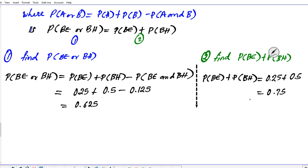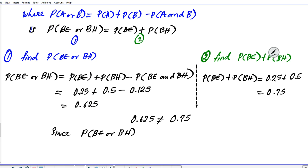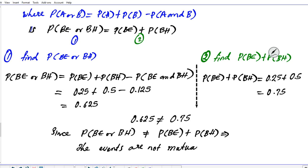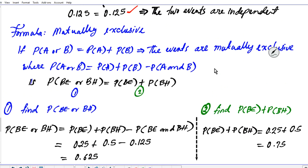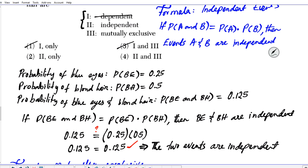The question is: are they the same? The answer is no — 0.625 is not equal to 0.75. Since P(BE or BH) is not equal to P(BE) plus P(BH), it follows that the events are not mutually exclusive. Therefore, the answer is option two: the events are independent only. Options one and three fail, and option four also fails since they're not mutually exclusive.